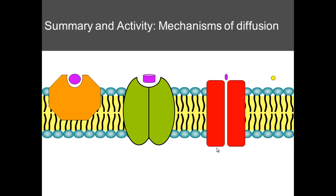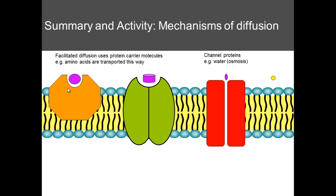Here is a summary of the different forms of diffusion. The green carrier protein physically changes shape as the amino acid moves through, while another type rotates and moves through the plasma membrane. Channel proteins enable polarized molecules like water to move through. We can also see the movement of molecules like oxygen directly through the phospholipid bilayer. What all of these have in common is that they are passive — they require no energy and move from an area of high concentration to low.